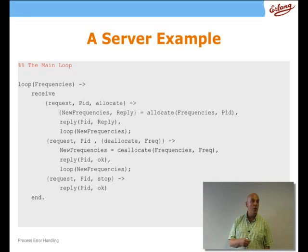In the other two cases, we will have a tail call. As the last thing in our body, we will call the loop again. So let's have a look at what happens in the allocate case. Well, what we do is we generate a new frequencies data, that's allocated and unallocated frequencies, and a reply by calling the function allocate. And then we send the reply back to the client, and then we call the loop with that new set of frequencies which have been allocated and deallocated.